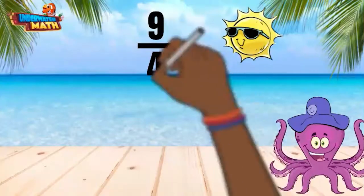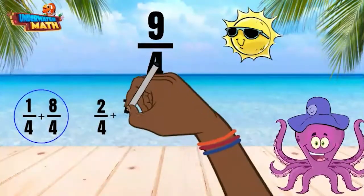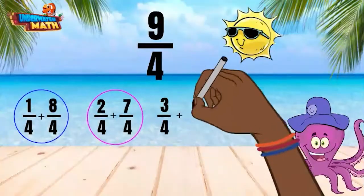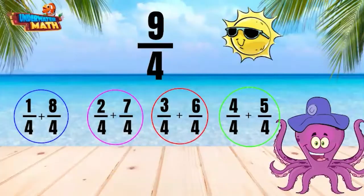Here we have 9/4 which can be broken down into a sum of fractions in many different ways. Think about all the ways you can make 9. When using these combinations as the numerators and 4 as the denominator, you are creating expressions that represent 9/4.